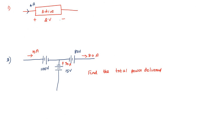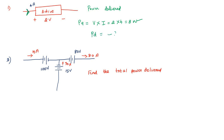Now I am going to explain some problems regarding power absorbed and delivered. Problem 1: find the power delivered in the circuit. Here, current is entering the positive terminal, so power absorbed PA = V × I = 2 × 4 = 8 watts. Therefore, power delivered PD = −8 watts.